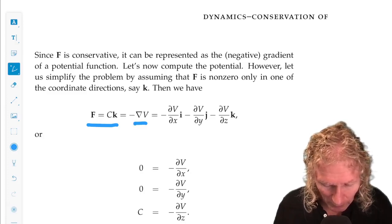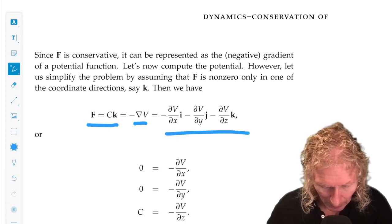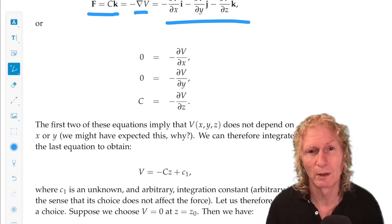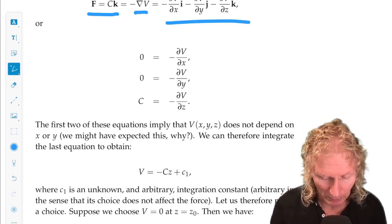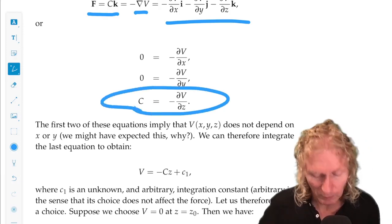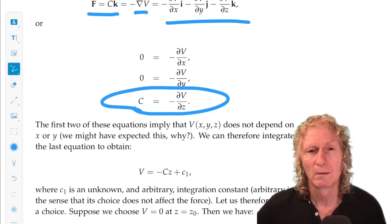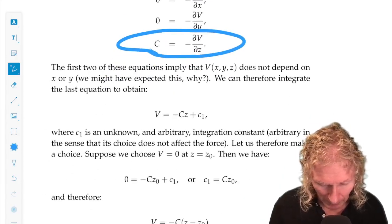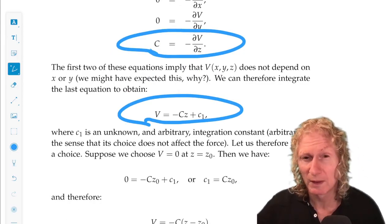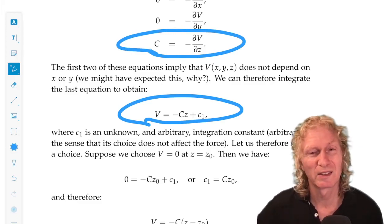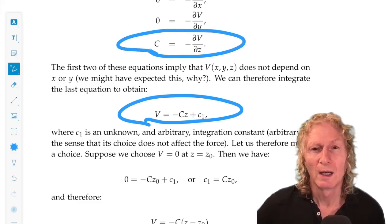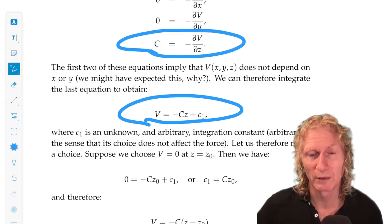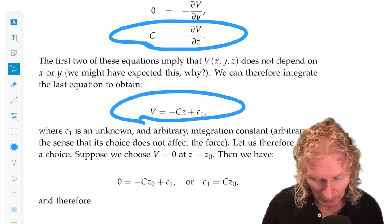And that's equal to minus gradient of V. And of course we see that V doesn't depend on X and Y, and of course it doesn't because the force doesn't depend on X and Y. And we see that C is minus dV/dz. That's a pretty simple equation to integrate. And we see that the solution of that would be V is minus CZ plus a constant. Now this constant doesn't matter in the sense that it doesn't affect the force. If we compute the gradient of this function, the constant is set to zero in that computation.